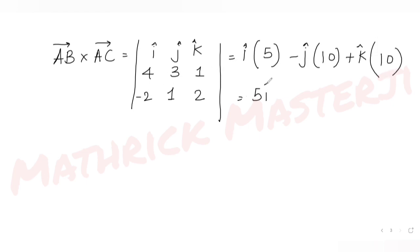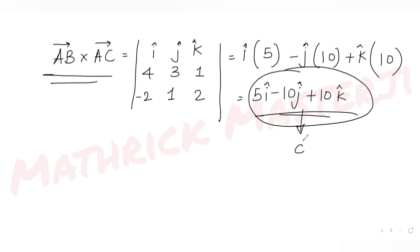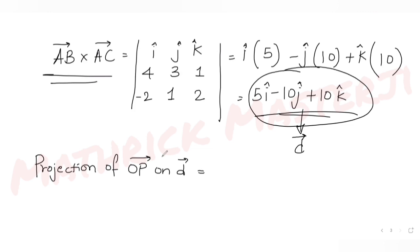So the cross product gives us 5i minus 10j plus 10k. This becomes the vector D, which is perpendicular to both AB and AC. Now I need to find the projection of OP on D, using the dot product of OP and D divided by the magnitude of D.